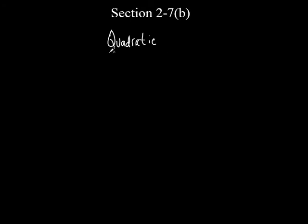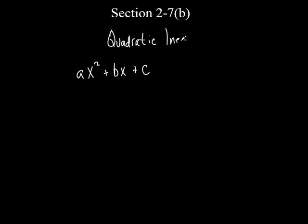When you see 'quadratic,' what's the first thing that pops in your head? AX squared plus BX plus C. And normally if you thought of quadratic, you'd say equals zero — a quadratic equation. But this time we're not dealing with an equation. We're dealing with inequalities, not equal signs. So it's an inequality. When we think of inequalities, we think greater than or less than. Let's just say greater than, and put a zero right there. This is an example of a quadratic inequality.